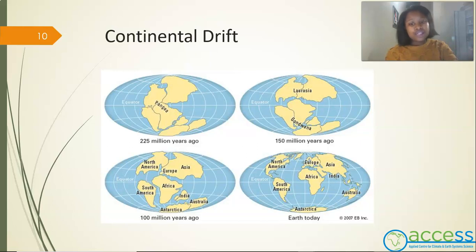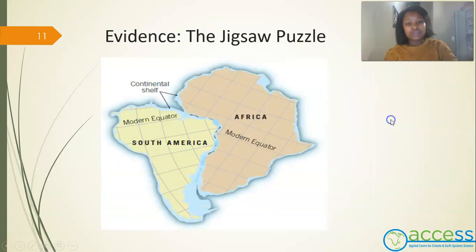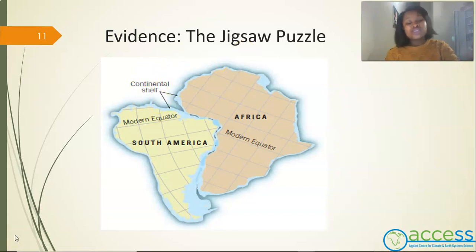With the continental drift theory, Alfred Wegener and those who advocated for it came up with substantial evidence supporting their point of view. The first set of evidence is the jigsaw puzzle. You will notice a best fit between South America and Africa when looking at their continental shelves, which suggests that the continents were once part of a supercontinent.